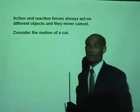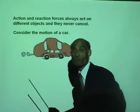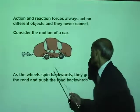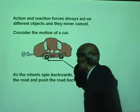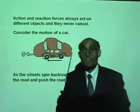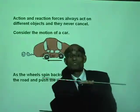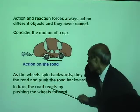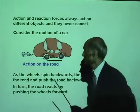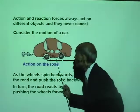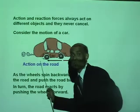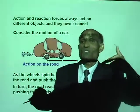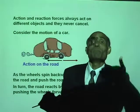Consider the motion of a car. A car is able to move because as the wheels spin backwards, they grip the road and push the road backward — that's the action. The reaction is the road pushing the car forward. The road reacts by pushing the wheels forward. It is the reaction of the road on the car that makes the car move forward.